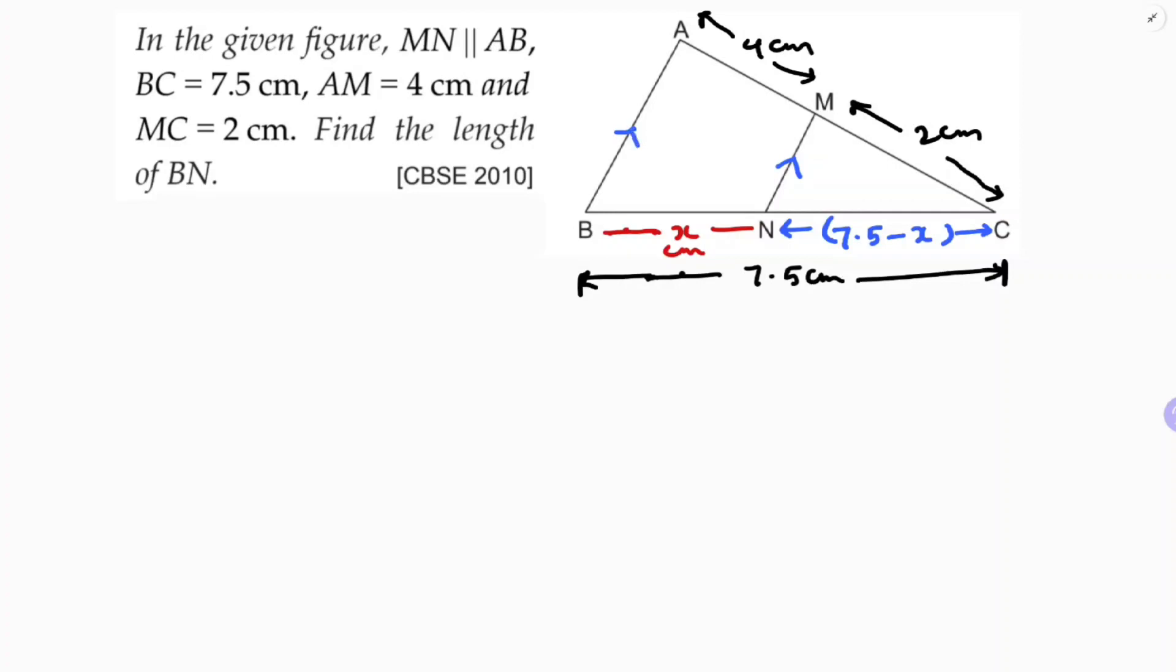Since MN is parallel to AB, I will apply the Basic Proportionality Theorem from vertex C. The theorem states that in triangle CAB, MN parallel to AB will divide the other two sides CA and CB in the same ratio. So CM by MA equals CN by NB.